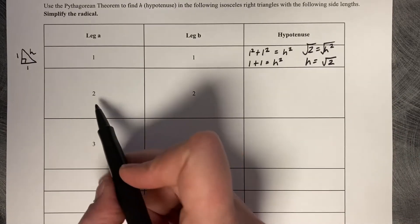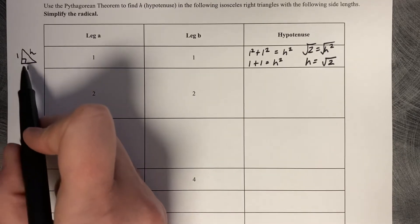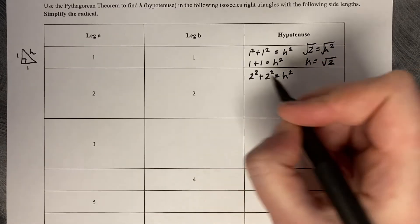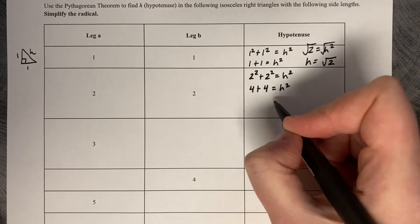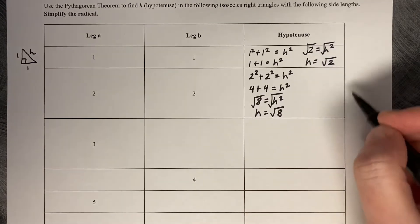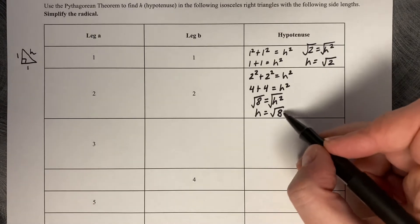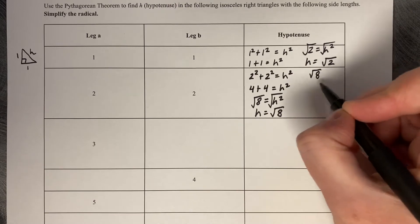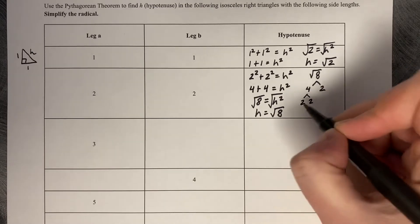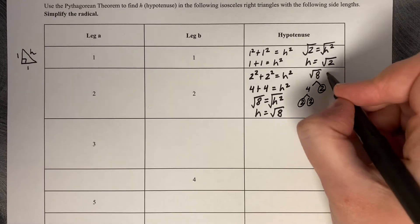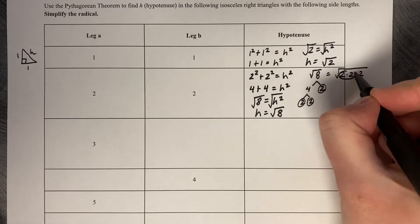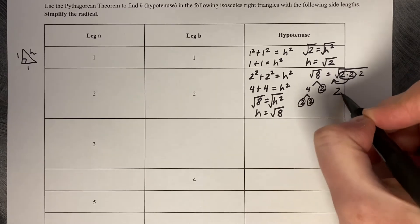Now let's look at a triangle with leg lengths of two. Two squared plus two squared equals h squared; four plus four equals h squared; eight equals h squared, so h equals the square root of eight. We simplify that radical using a factor tree: eight breaks into four and two, which is two times two times two. The square root of four is two, so the square root of eight simplifies to two square root of two.